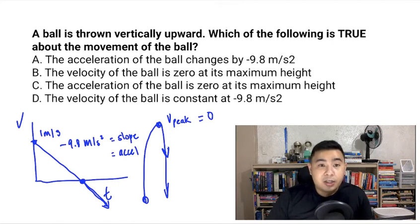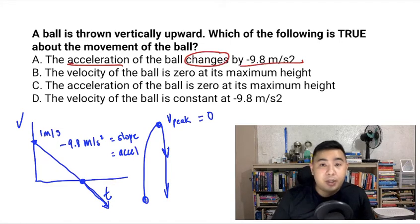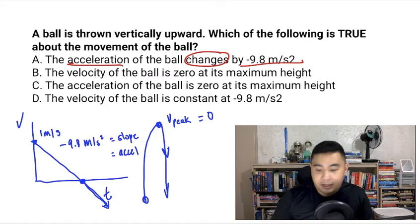Now, let's take a look at the choices. So the acceleration of the ball changes by negative 9.8 meters per second squared. We know that this is not true because the acceleration of the ball is constant. It doesn't change, it's constant at 9.8 meters per second squared.